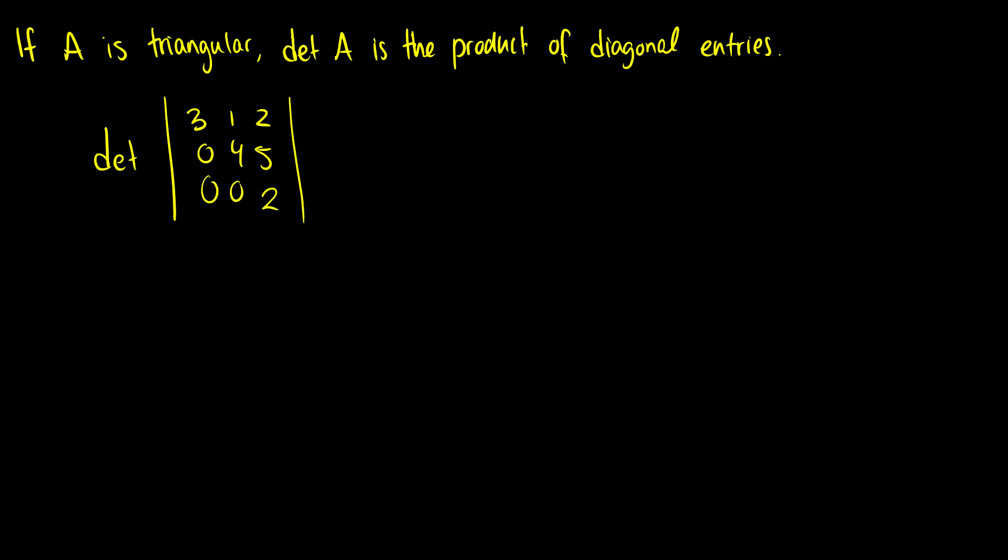One last theorem: If A is triangular, then the determinant of A is the product of diagonal entries. So if I take a look at the determinant of this, this is just going to be equal to 3 times 4 times 2, because these are the diagonal entries.